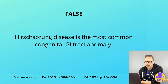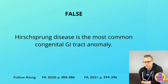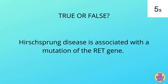The statement that Meckel's is not the most common congenital GI anomaly is false — Meckel's diverticulum is actually the most common congenital GI anomaly, seen in approximately 2% of the population.